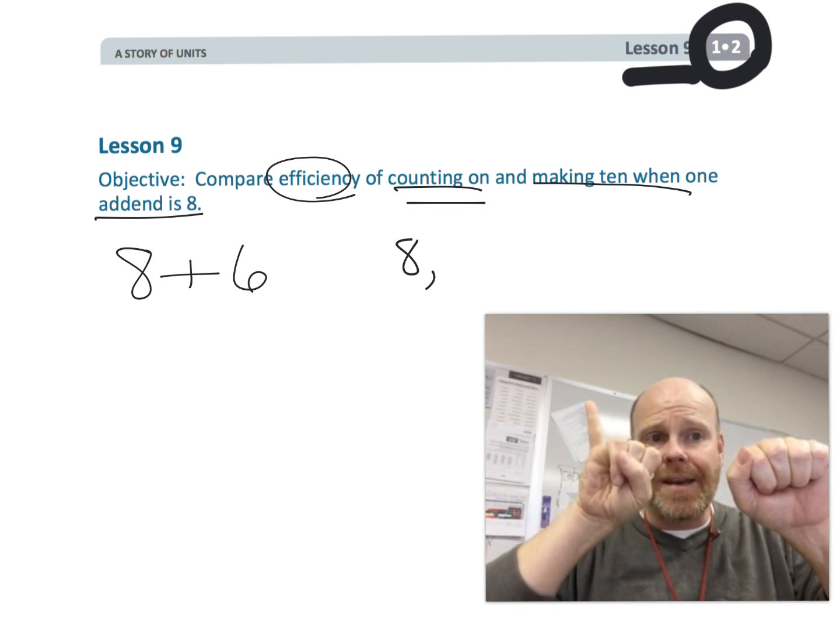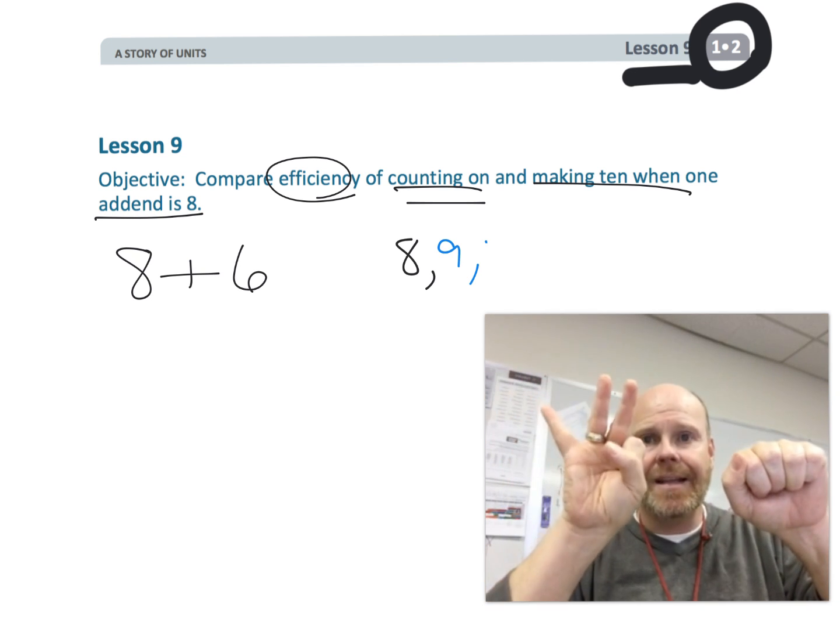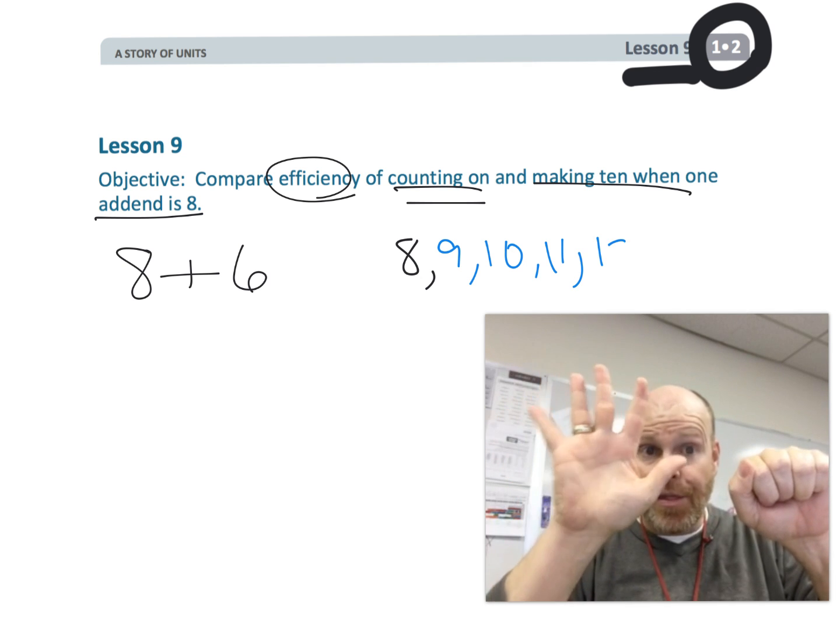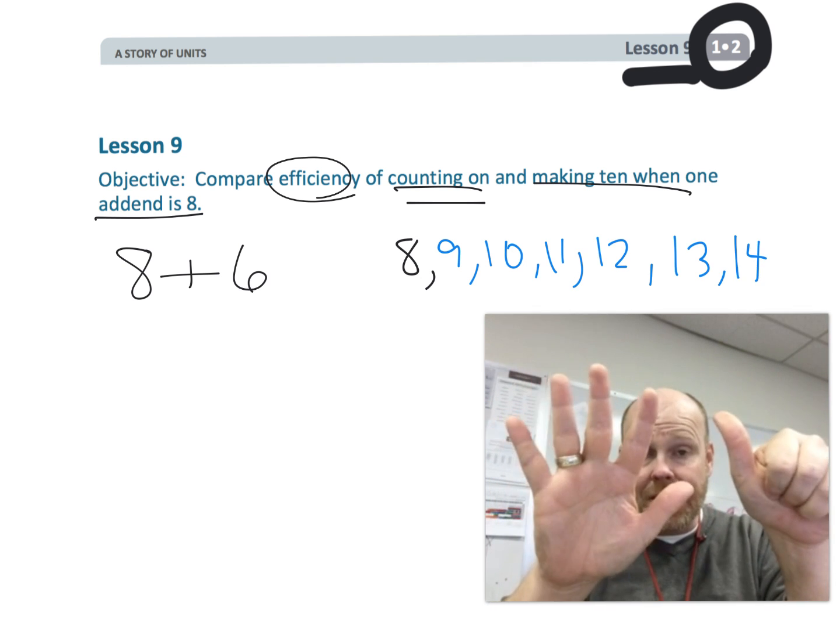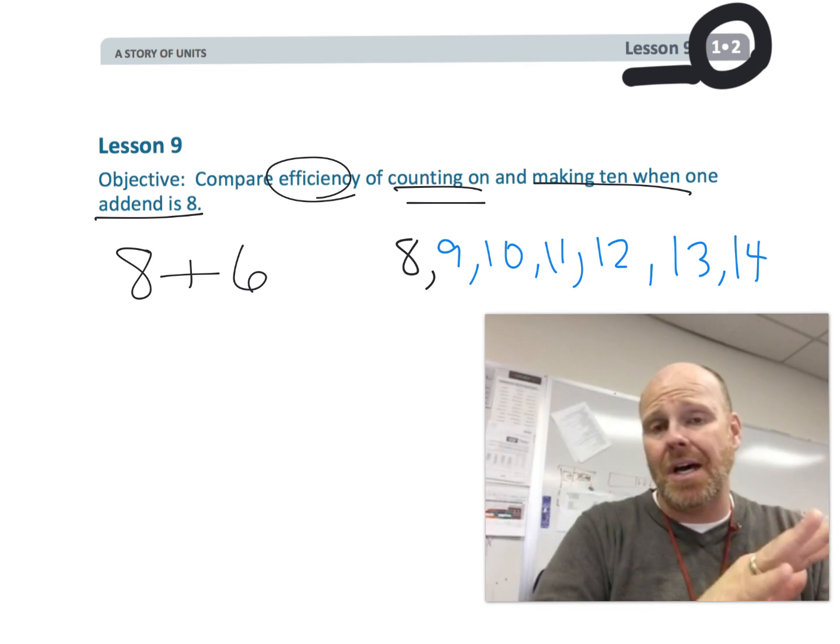and then 9, 10, 11, 12, 13, 14. So 8 plus 6 is 14. That's the count-on method.